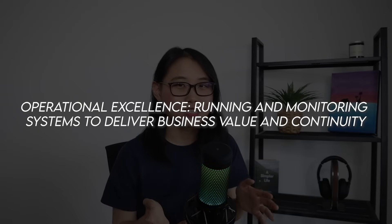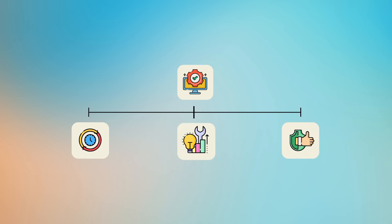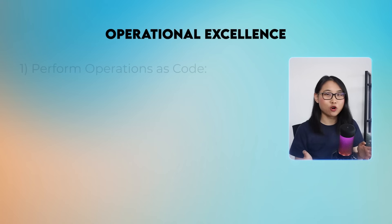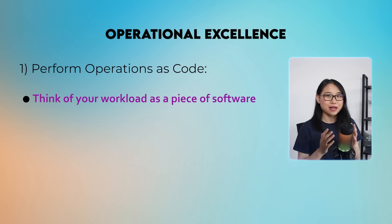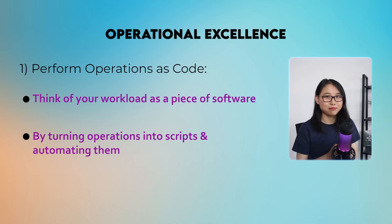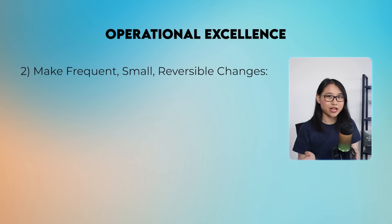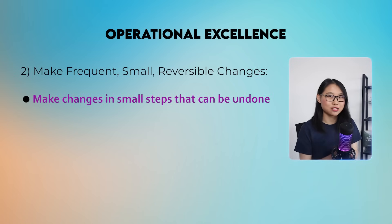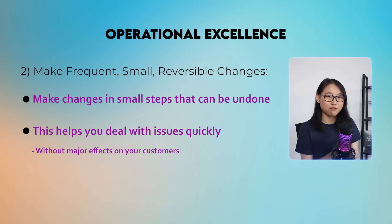Starting with the operational excellence pillar, this is about running and monitoring systems to deliver business value and continuity. The goal is not only to have a system that's efficient and reliable, but also one that improves over time. The first design principle is to perform operations as code — think of your entire workload as you would a piece of software. By turning your operations into scripts and automating them, you can reduce mistakes from human error and create predictable responses whenever certain events occur. The second principle is to make frequent, small, reversible changes — the aim is to make changes in small steps that can be undone if needed, helping deal with issues quickly without major effects on your customers.